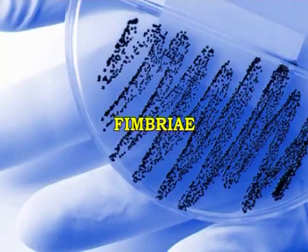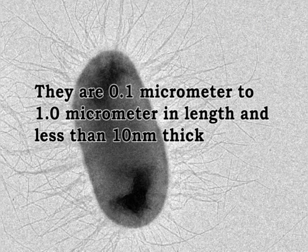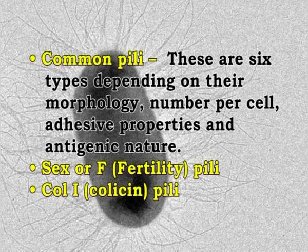Fimbriae are hair-like appendages projecting from the cell surface as straight filaments, also called pili. They are 0.1 to 1 micrometer in length and less than 10 nanometers in thickness. Fimbriae are composed of a protein called pilin. They are unrelated to motility and are found on motile as well as non-motile bacteria. There are three main types of fimbriae: first, common pili — six types depending on morphology, number per cell, adhesive properties and antigenic nature; second, sex or F pili, also known as fertility pili; and third, co-adhesive pili also called coli.